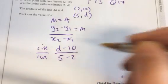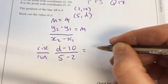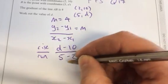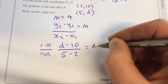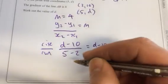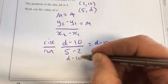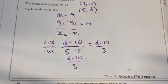The change in y over the change in x equals d minus 10 over 3. And we know that they gave us that was equal to 4.